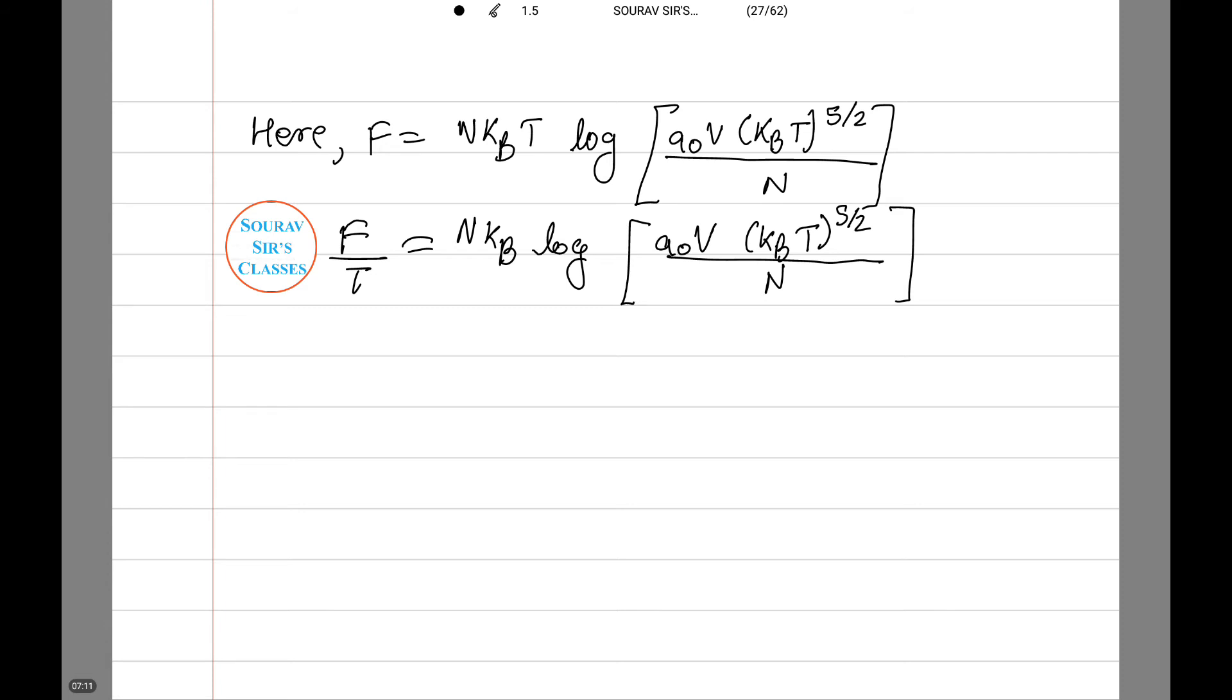Here, F equals NkBT log of [a₀V(kBT)^(5/2)/N]. Therefore, F/T equals NkB log[a₀V(kBT)^(5/2)/N]. The next step is that we partially differentiate this function. Therefore, ∂F/∂T at constant volume equals...